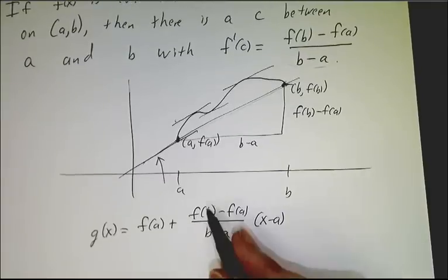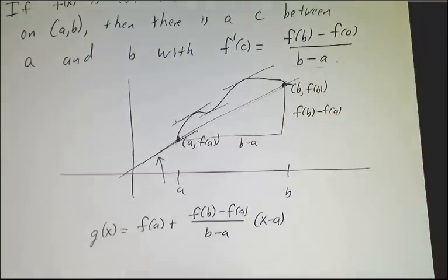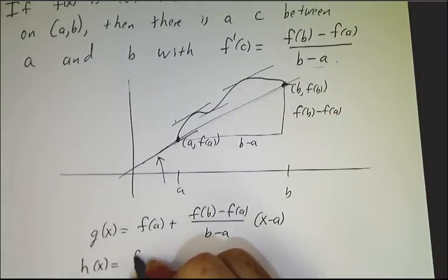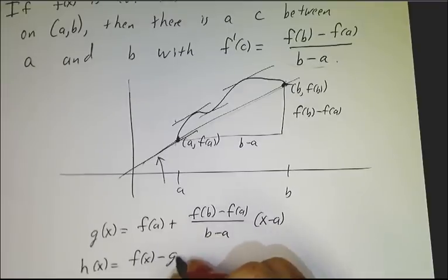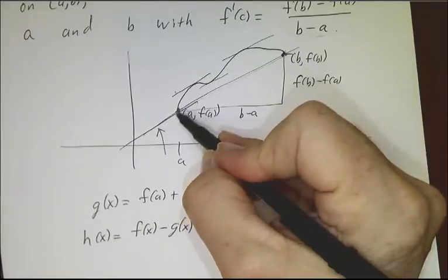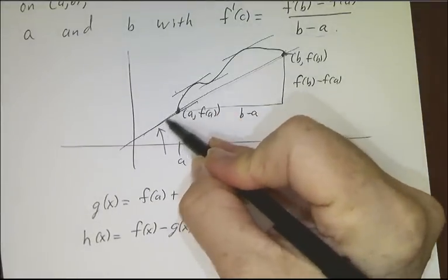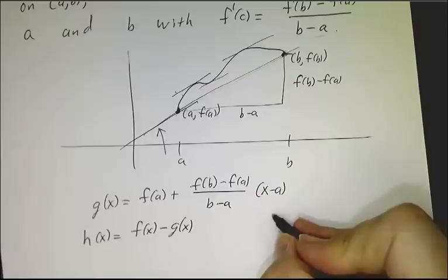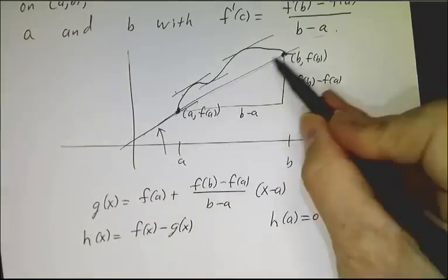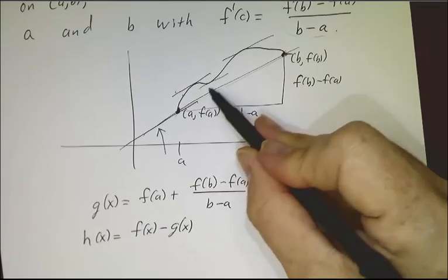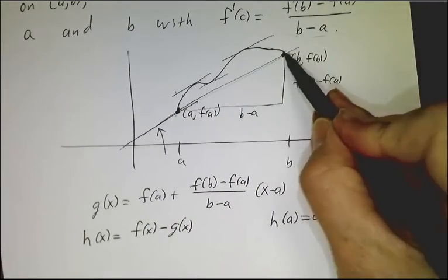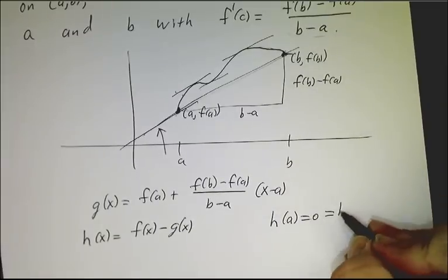And f(x) is just our original function. And we'll define h(x) to be f(x) minus g(x). So at this point, f and g are the same thing, so we have that h(a) equals 0. And at this point, f(b), which is the point on the curve, and g(b), which is the point on the straight line, those are also the same thing.